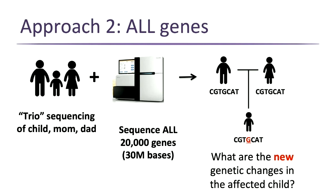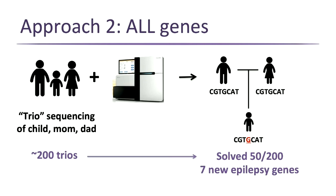We've done this now for about 200 trios — mom-dad-child pairs. We've solved or identified the genetic mutation in about 25% of those families and identified at least seven new epilepsy genes using this method. Some solved cases are due to genes we already knew about, but some are new causes. We're continuing work on additional candidate genes identified.